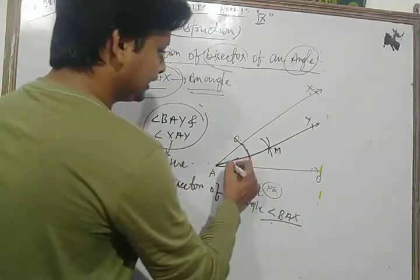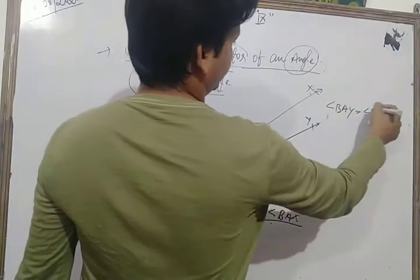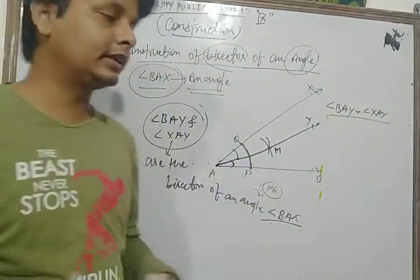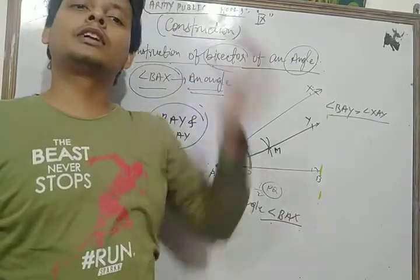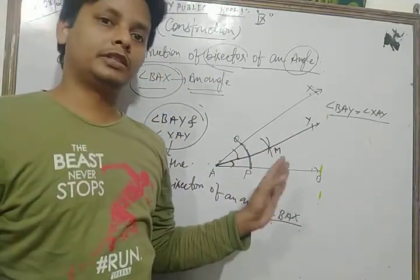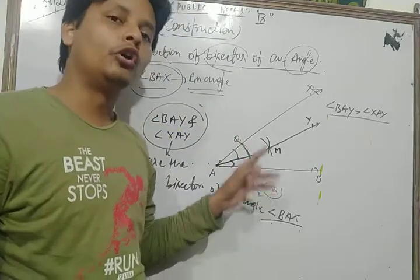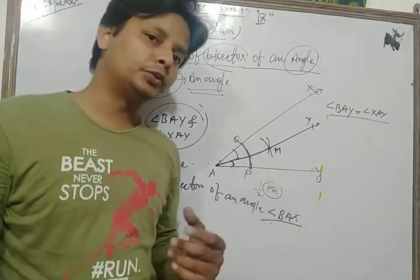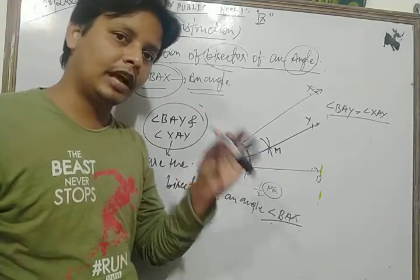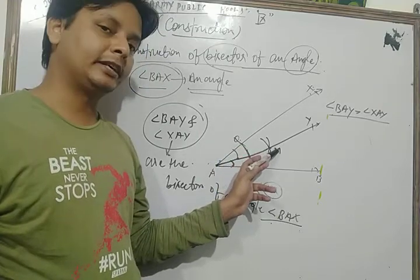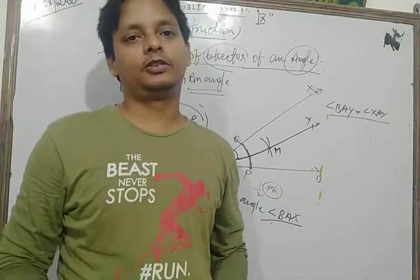Then angle BAY equals angle XAY — AY is the bisector of angle BAX. To summarize: draw angle BAX, draw arc PQ with A as center, then from P and Q with radius more than half PQ draw intersecting arcs at M, join AM produced to Y. This is the complete process for constructing the angle bisector.